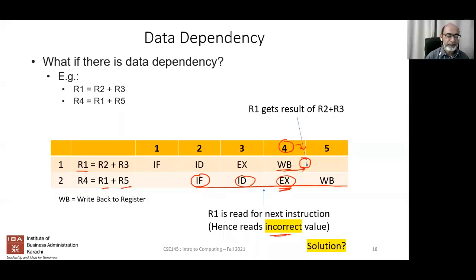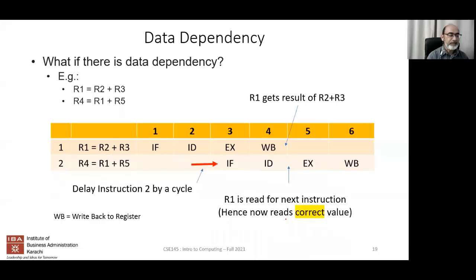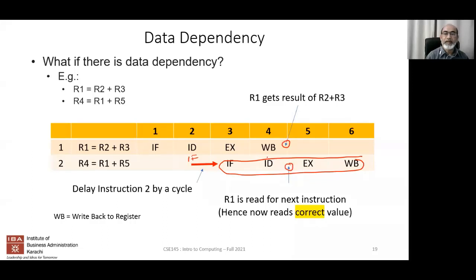The solution is to delay the pipelining. Instead of starting instruction 2's fetch immediately, the entire cycle is delayed by two cycles so that r1 is written back before instruction 2's execute stage reads it. This ensures the correct value of r1 is available.